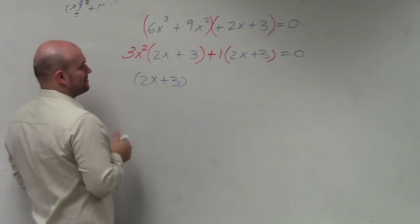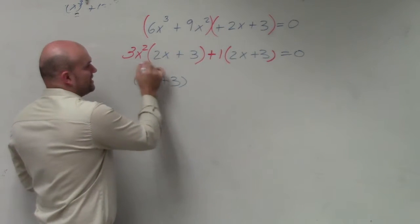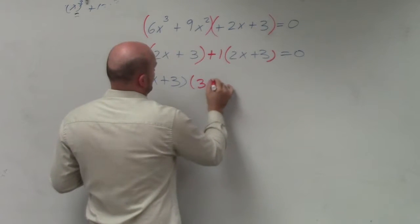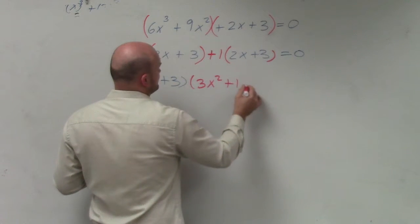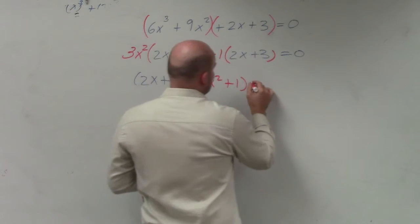When we factor out the 2x plus 3, we're left with a 3x squared plus 1. And then that's equal to 0.